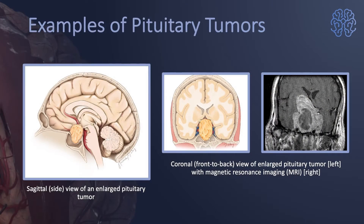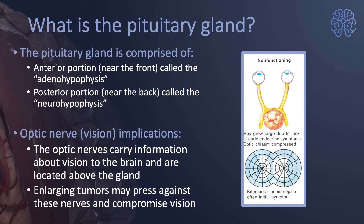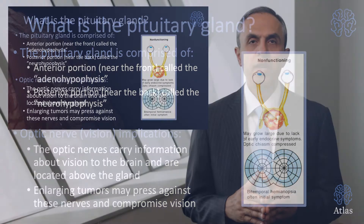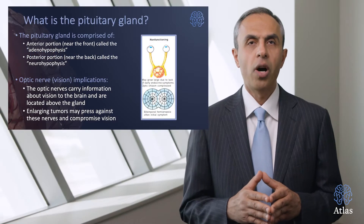These three images are examples of a pituitary adenoma, as you can see in orange, and the last image on the right in white shows how large these tumors can get. They're right at the level of the skull base, between your eyes and slightly in the back of the head. The pituitary gland has two portions: the anterior portion called the adenohypophysis, and the posterior portion called the neurohypophysis.